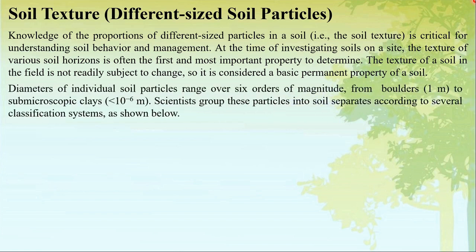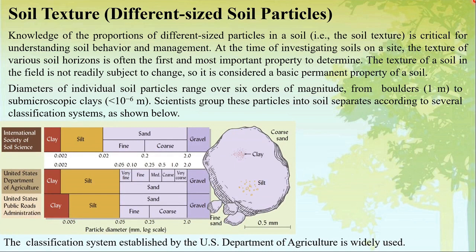The diameter of individual soil particles ranges from 1 meter in the case of boulders to less than 10 to the power of minus 6 meters in the case of submicroscopic clays. There are several classification systems, including those by the International Society of Soil Science, the United States Department of Agriculture, and the United States Roads Administration. The USDA classification system is the most widely used.